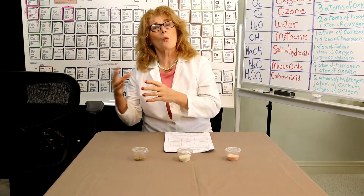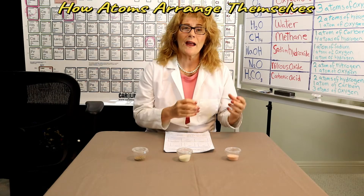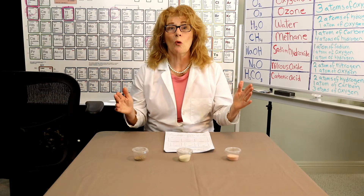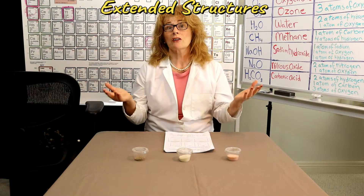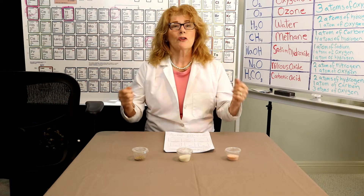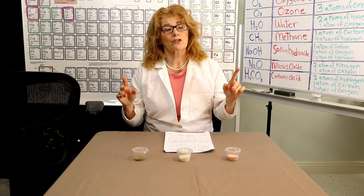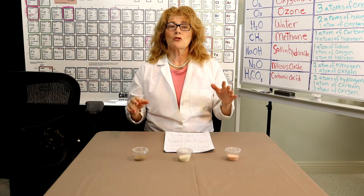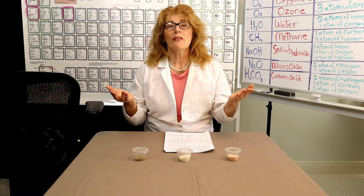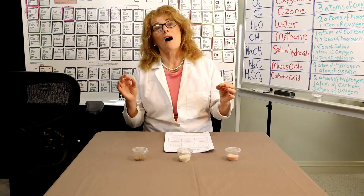Sometimes elements can arrange themselves one way, and other times they'll arrange themselves differently. The way that these combine to make what we call extended structures is really important to understanding how solids are and what the structure of matter is all about. This really gets back to our original question: what is the difference between graphite and a diamond if they're both made out of carbon? And this really gets down to what this lesson is about — the arrangement of atoms.